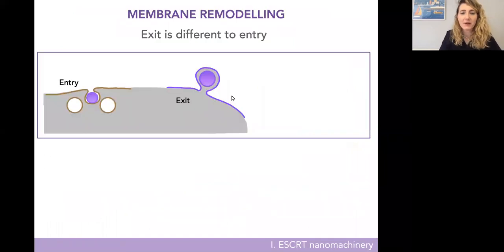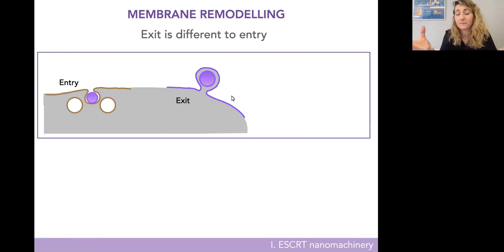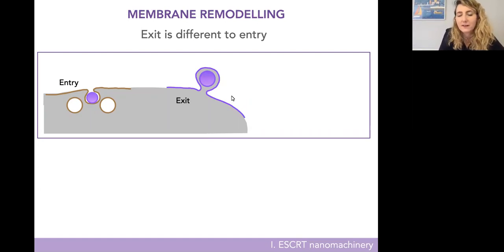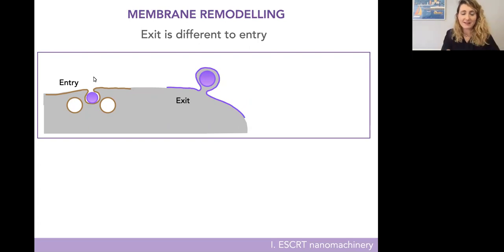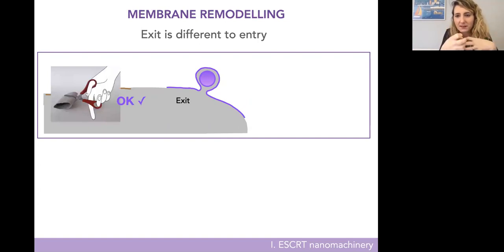Let me start with membrane remodeling. The cell membrane defines a cell — for the cell to live, it needs to take material in and expel material, both waste and signals for communication. Exit is very different from entry. As a physicist, I would think you just take whatever machine helps you enter the cell and put it on the other side to exit. But the cell is asymmetric, and all the machinery is on the inside in the cytoplasm. To take material inside the cell, you need to cut the membrane neck from outside — like a pair of nano scissors squishing the membrane neck from the outside.